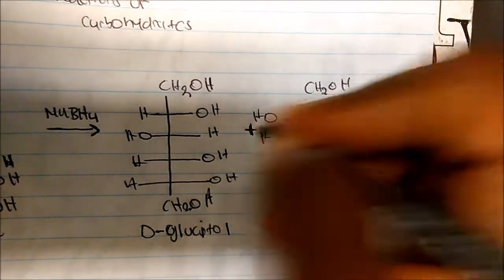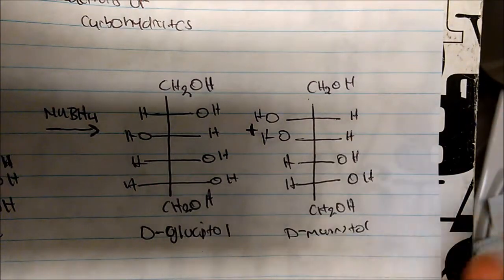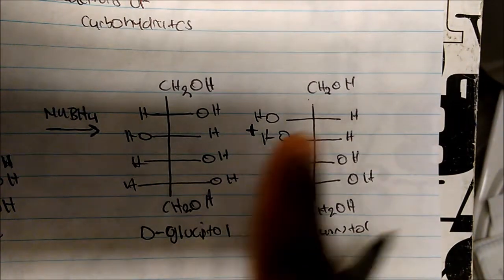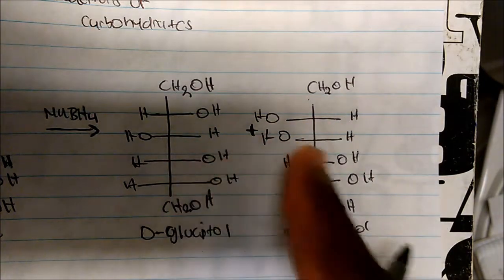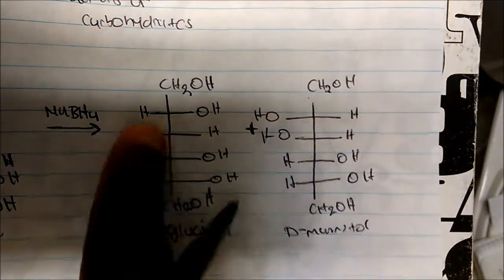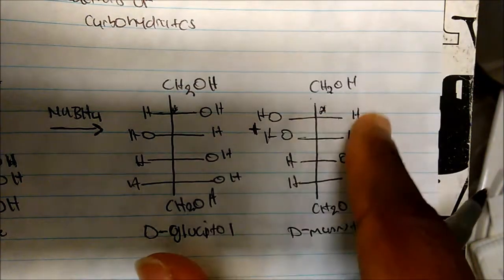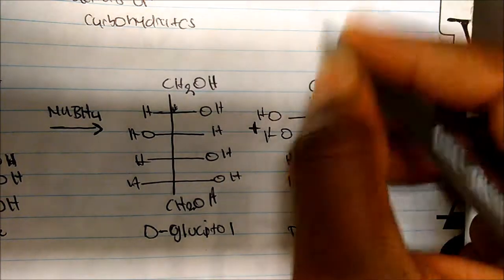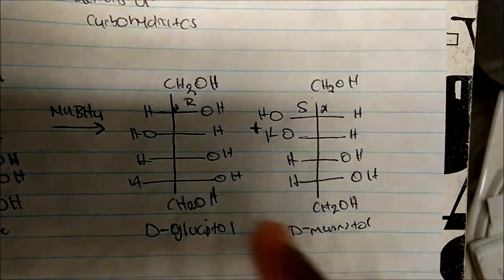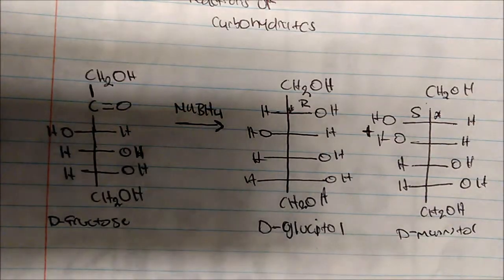You could think of these as epimers, right? Only one chiral center changes. Notice that the chiral center of interest that changed was this one — everything else has pretty much stayed the same. This one is R-configured. So we'll get a mixture any time we reduce this carbonyl with sodium borohydride.